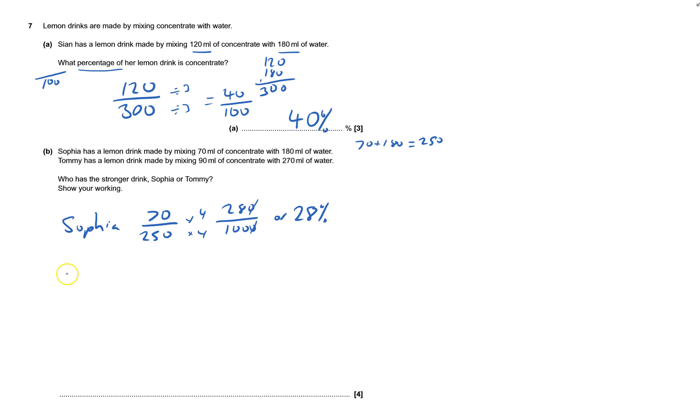And now Tommy, he's got 90 plus 270, that is 360. So Tommy's got 90 out of 360, you know that from circles, that will be a quarter. And a quarter is 25 percent.